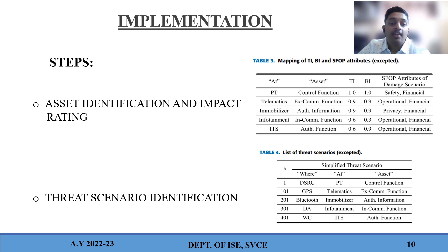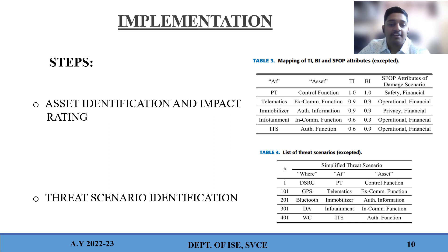Step 2 is threat scenario identification. Here, we define the threat scenario, which determines how an attacker reaches the assets. We apply the Asset Container Method and describe the attack routes by a combination of the perspectives: where, at, and asset. The table shows some examples of combinations. At this stage, we describe all combinations of these perspectives. For example, Threat #1 means a threat scenario of intrusion from the DSRC interface and attack on the control function of the PT module.